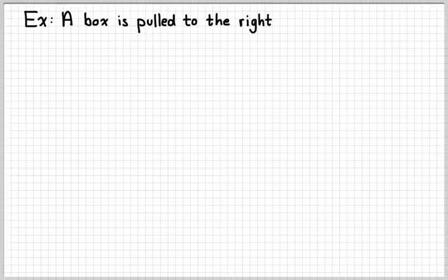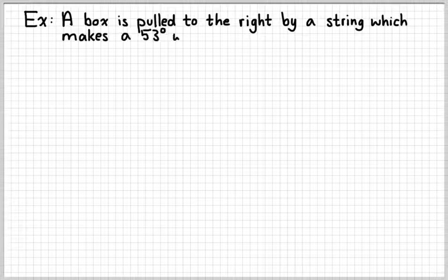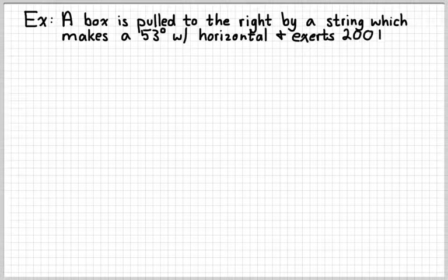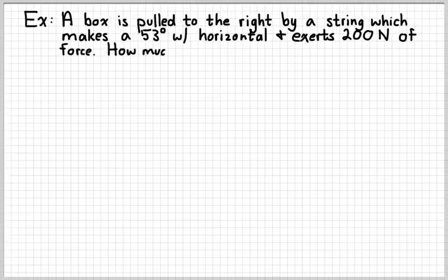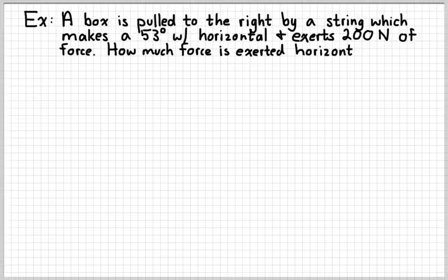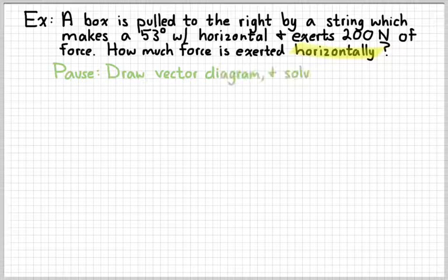Let's look at another example. Suppose that we pull a box to the right by a string, which makes a 53 degree angle with the horizontal, and exerts 200N (N means newtons, we'll learn more later) of force. The question is how much force is exerted horizontally. So you don't really need to know anything about forces to take a vector that's 53 degrees with the horizontal and 200 something long and figure out the horizontal component of it. So see if you can press pause, draw a vector diagram, and then solve for the horizontal force on this box.